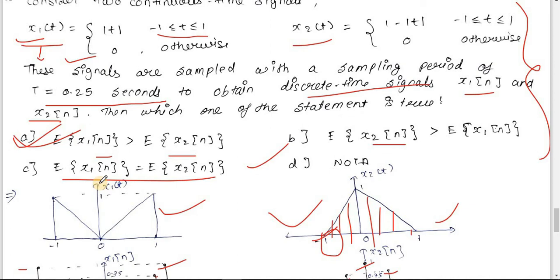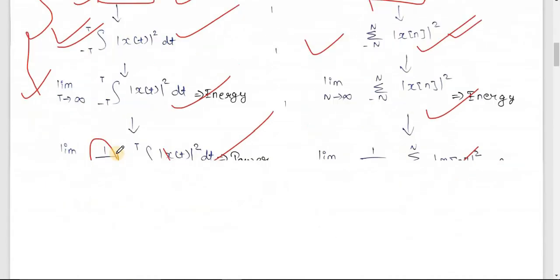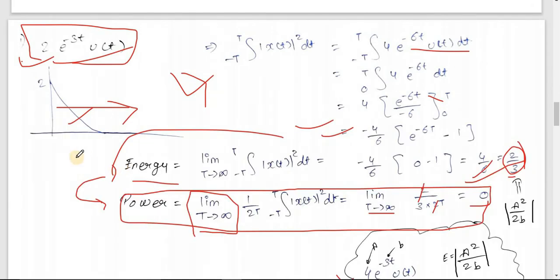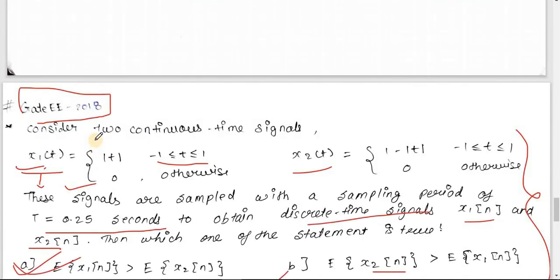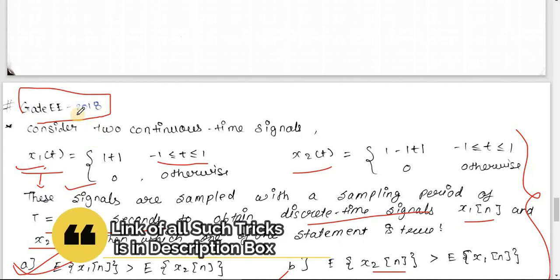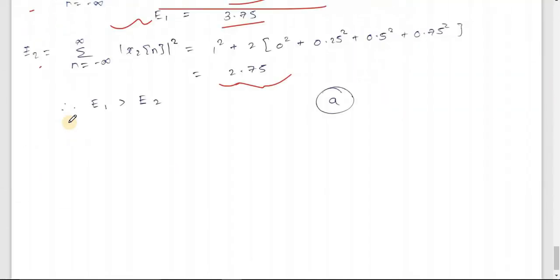As a task, try to find the energy of the continuous time signals x₁(t) and x₂(t) and compare them - write your answer in the comments. To summarize: we covered Trick 1 (graph-based identification of energy/power signals), the exact value procedures for continuous and discrete time, Trick 2 (E=PT relationship), worked examples including generalized formulas, and the GATE Electrical 2018 question. Memorizing the generalized answers gives you extra speed, though it is not mandatory.